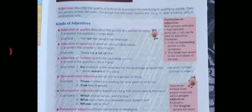Students, we all know what an adjective is. An adjective is a word which describes the quality of a noun or a pronoun. They are usually written between an article and a noun, or before the noun.